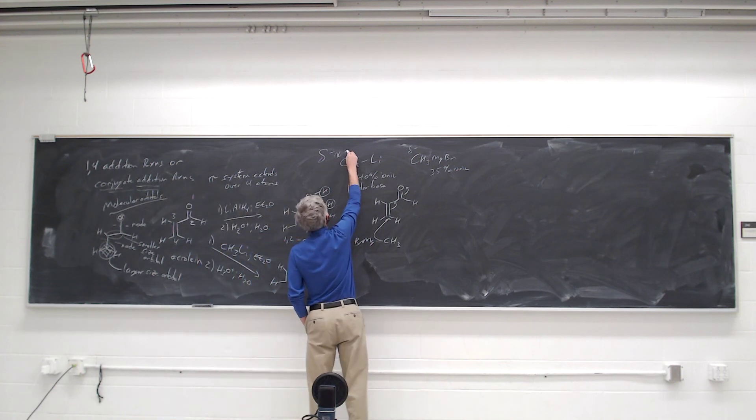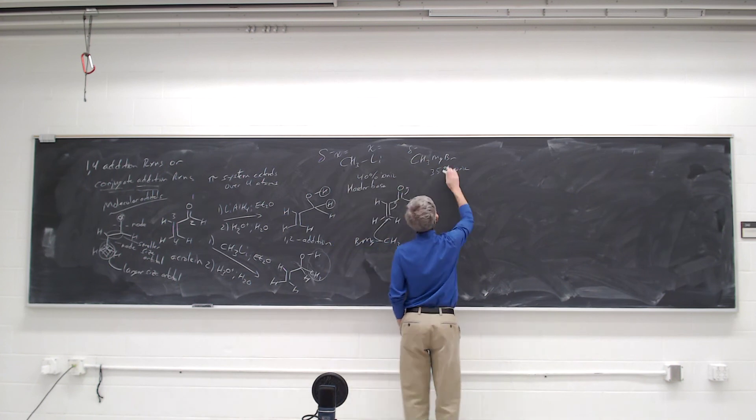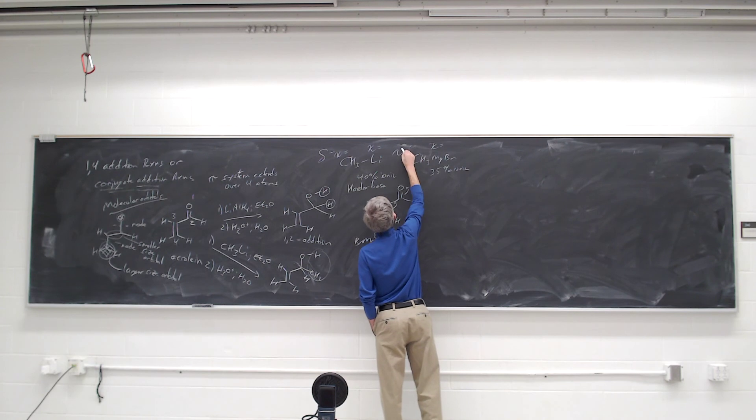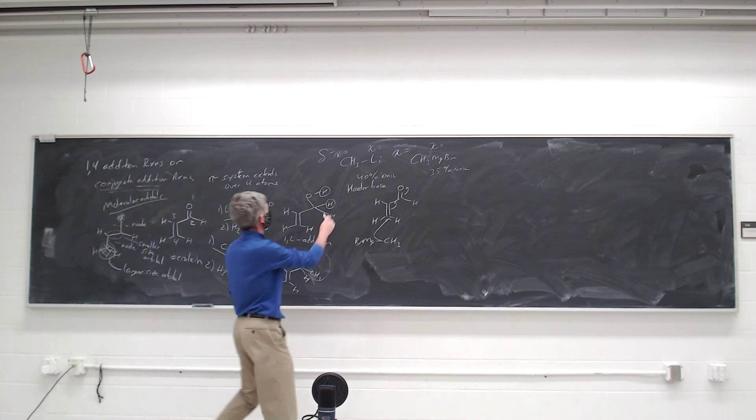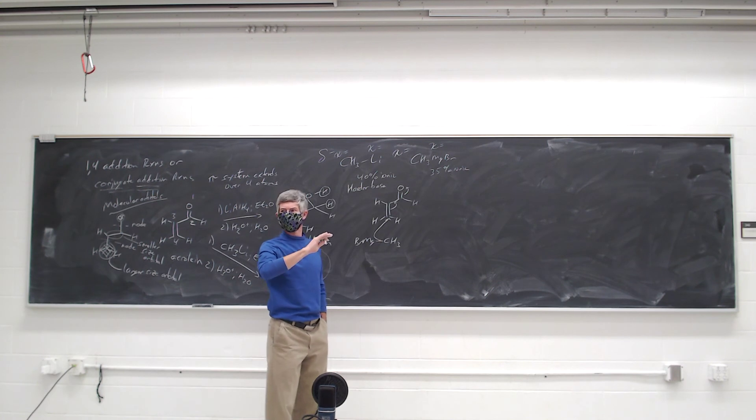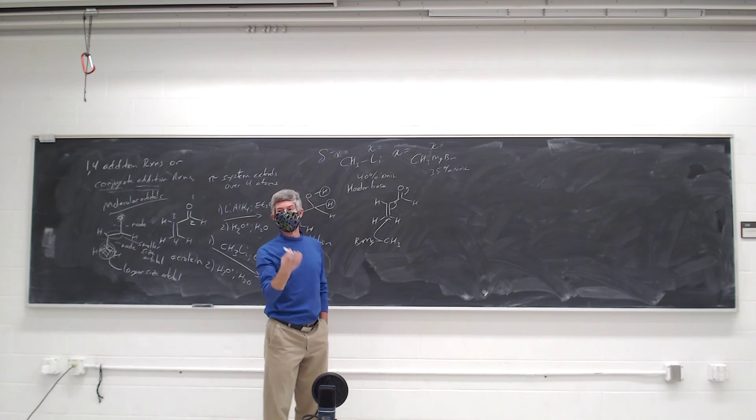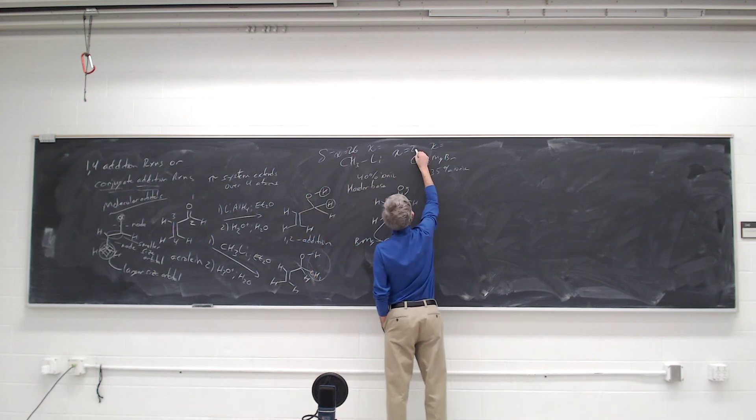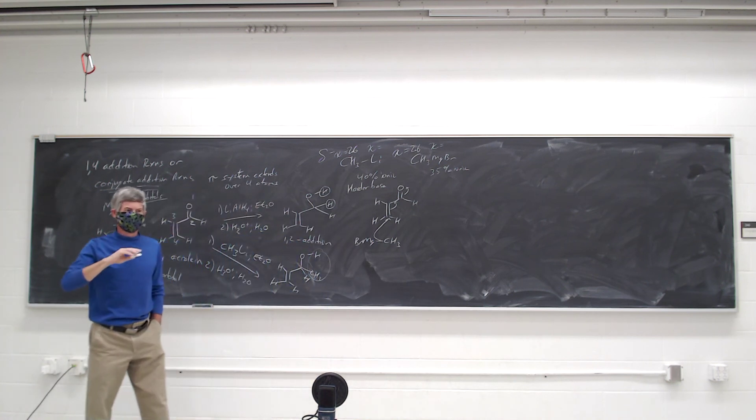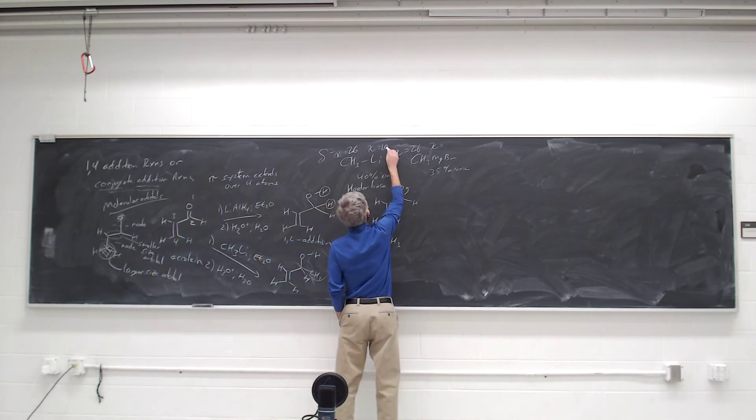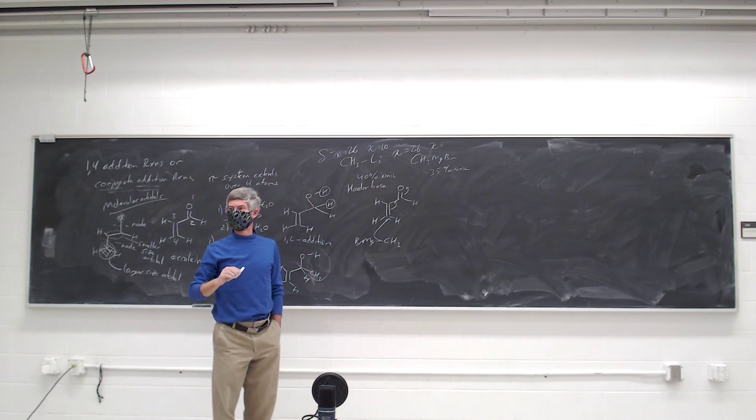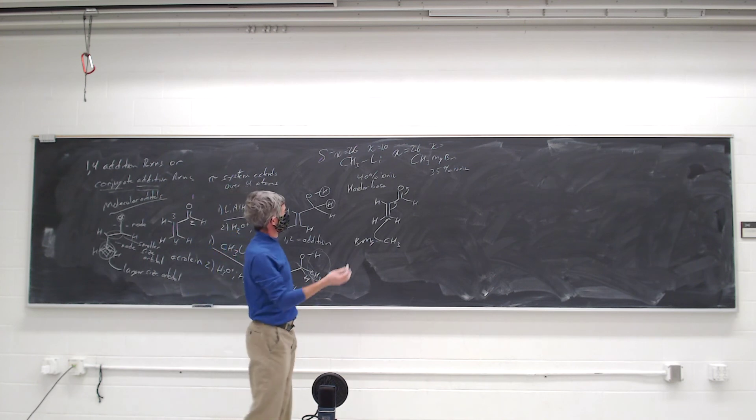What makes a bond polar? Electronegativity difference. Difference in electronegativity. What's the electronegativity of carbon? It's like 2 and a half. 2.6 actually. What's the electronegativity of lithium? 1. Right. Because you basically drop by a half as you go across. What's the electronegativity of magnesium? Is it like 1.2 or something? More than 1. Right. That's the key. It's like 1.2.